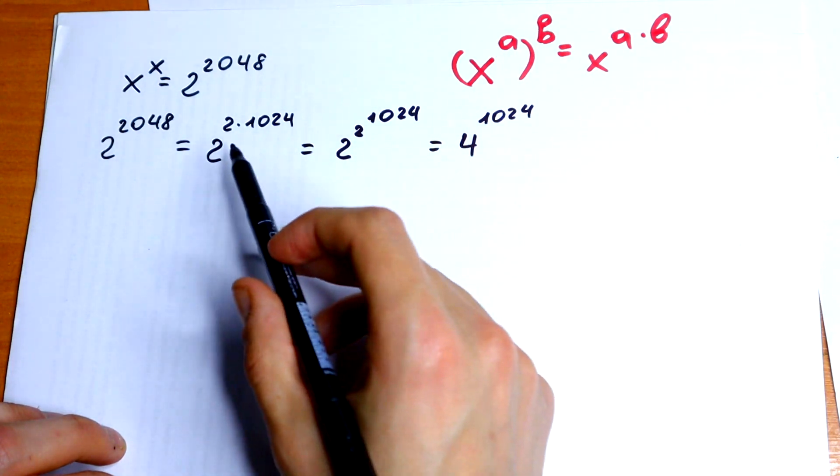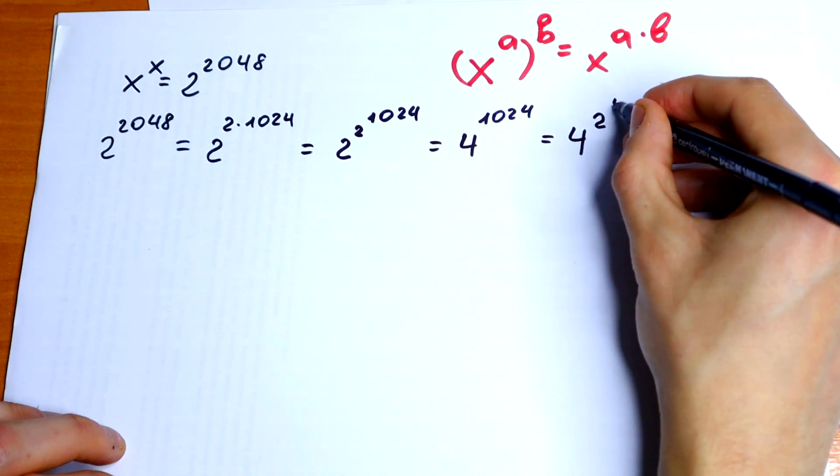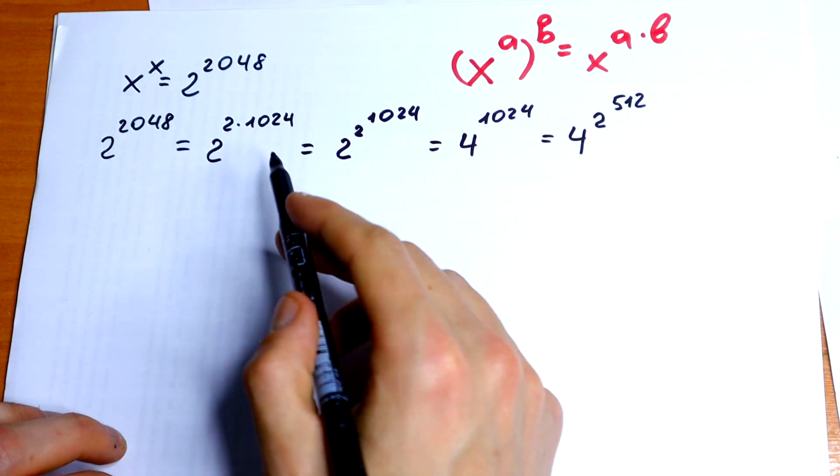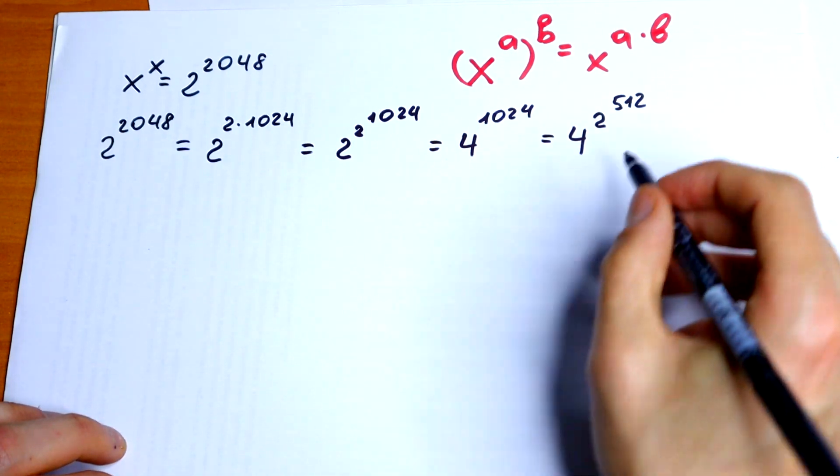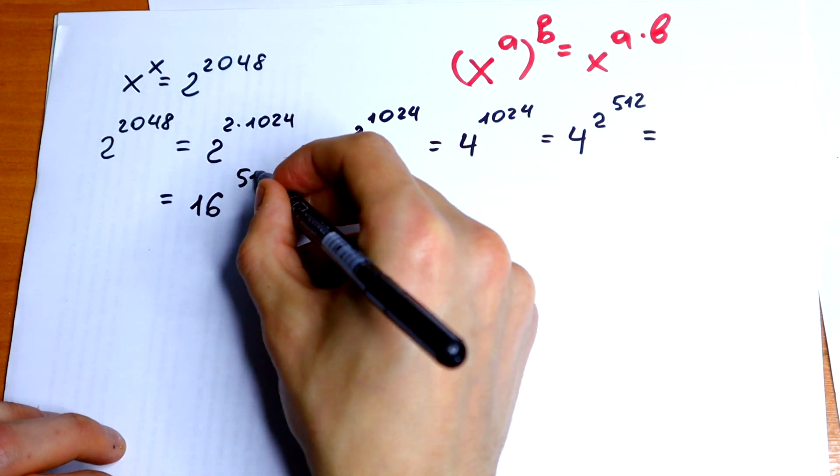Let's do this once more. So, 4 square to the power 512. Let's do this step once more. So, we will get 16 to the power 512.